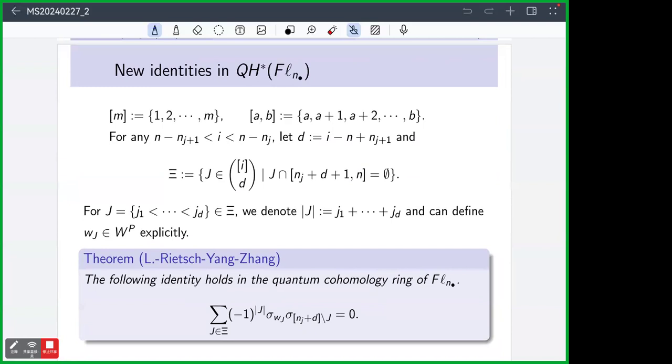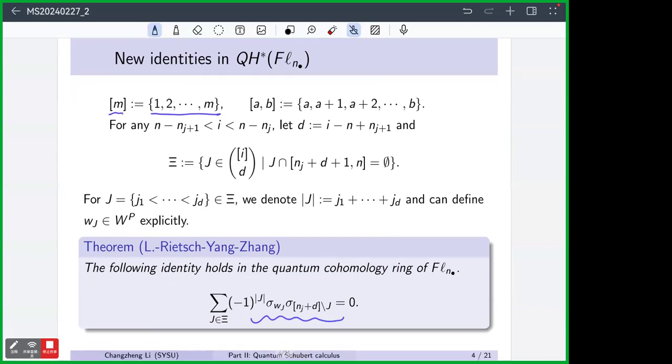And in our paper, we proved some new identities in quantum cohomology in this form. So we take the notation M is 1 to M, and AB just means integers from A to B. And once we are given an element i between two, so that means once we are given some i here, we denote this d to be i minus m plus m_j plus 1. And then we define a commutative set C in this form. And also we consider the weight to be the sum of all numbers in this set. Then we can prove in the quantum cohomology of the patch flag, the quantum product of this, the summation equal to 0, this kind of identity.